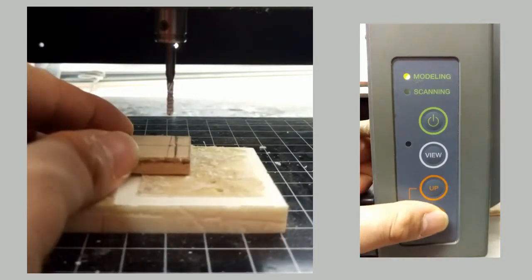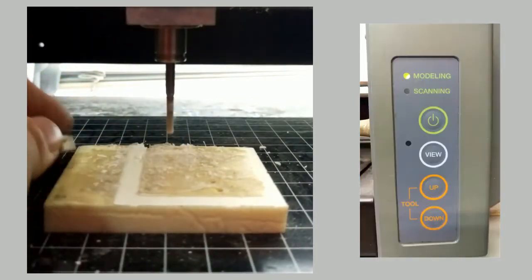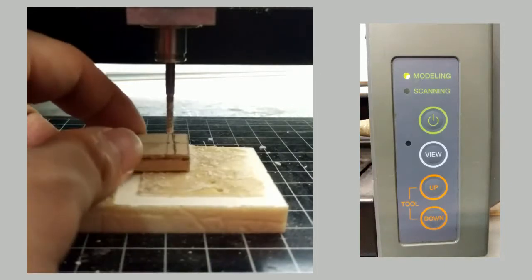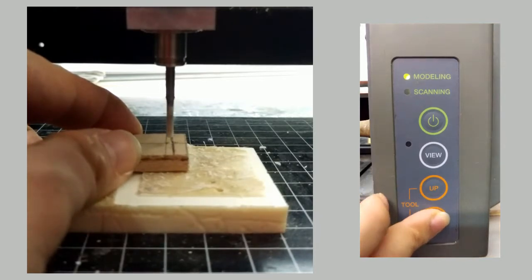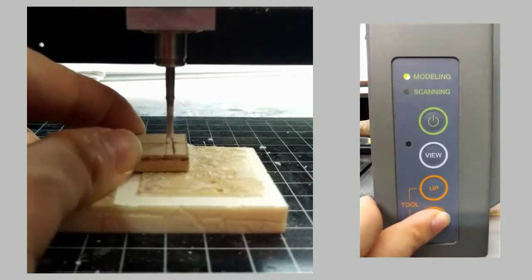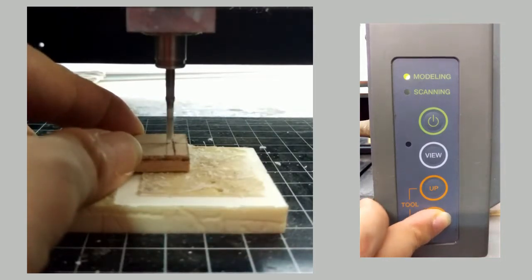Now I'm going to demonstrate how to use the MDX-20 to manually drill a hole. It's easy to control the Z-axis by pressing the two up and down buttons of this CNC model. The drill bit moves 25 microns per press, tapping the down button to slowly move down the tool.